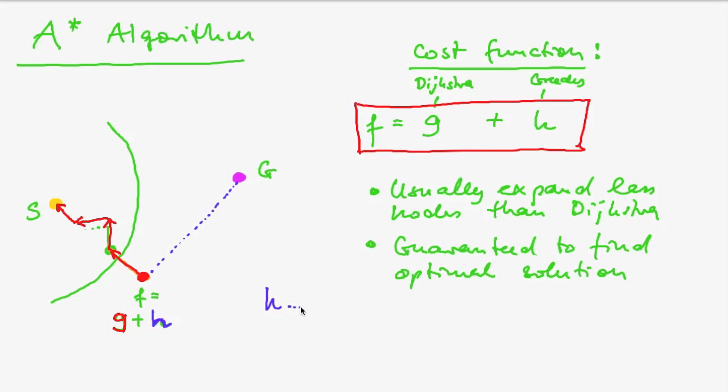And I should add the following. The h function must be admissible, which means that the actual cost from n to the goal must be larger or equal to h, the estimated cost.